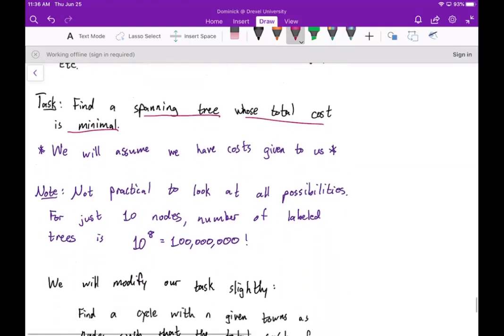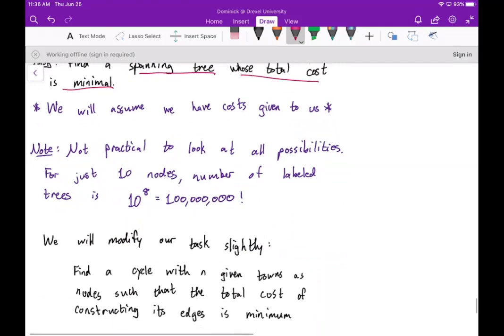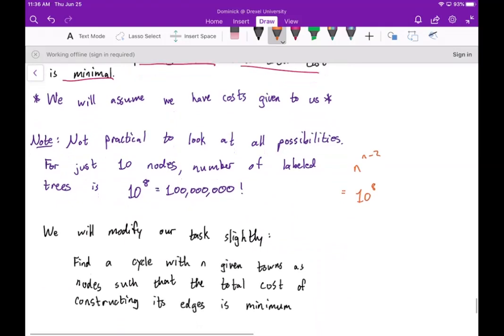Now of course it's not practical to look at all possibilities, right? Because for if we have 10 nodes, the number of labeled trees is 10 to the eighth, which of course is 100 million. Because it's n to the n minus two, so it's 10 to the eight.